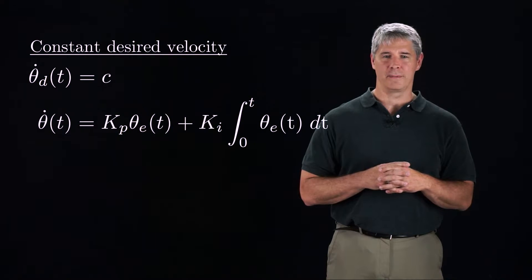To fix this, let's augment the P-controller with another term that is proportional to the integral of the error over time. Ki is called the integral gain, since it multiplies the time integral of the error.